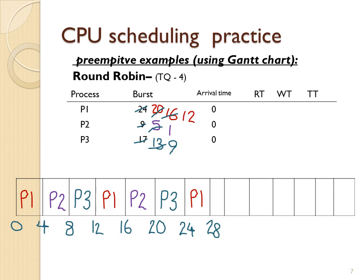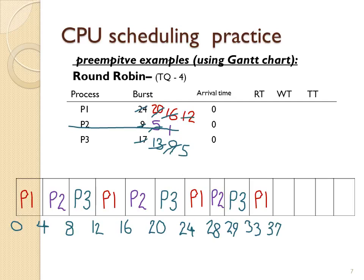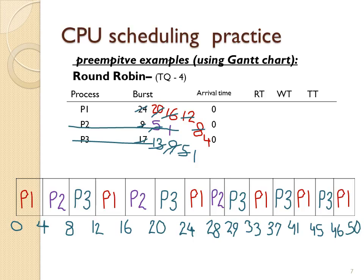P1 goes again for 4 time units, then P2 goes and completes, then we do P3. We continue cycling through P1 and P3 until at last P1 finishes, and the current time when they all finished is time 50. To calculate response time, take from the arrival time (0) until the first time on the CPU: P1's response time is 0, P2's is 4, and P3's is 8. To get turnaround time, take the last entry in your Gantt chart and subtract the arrival time: P1 is 50, P2 is 29, and P3 is 46.